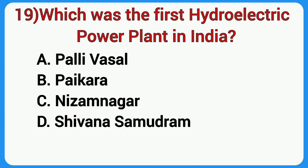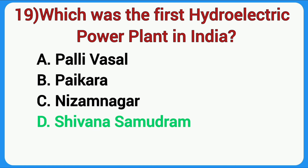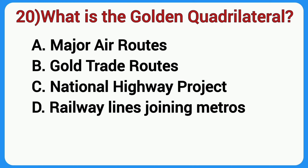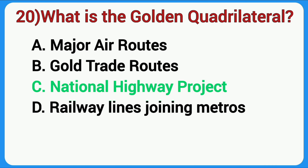Which was the first hydroelectric power plant in India? Answer is Sivanasamudra. What is the Golden Quadrilateral? Answer is a National Highway Project.